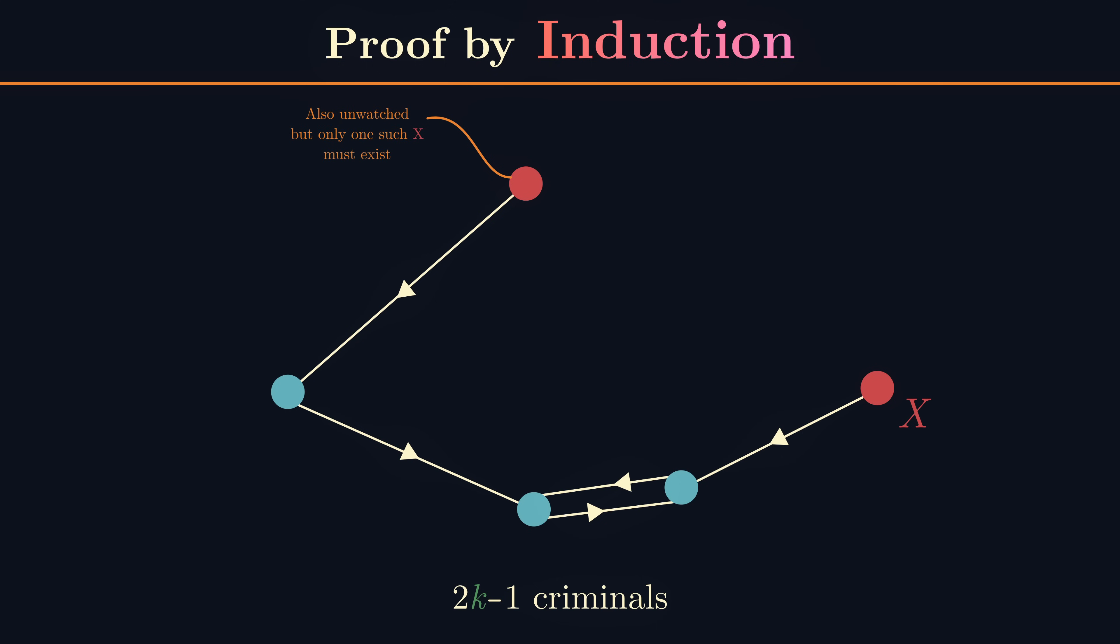Then for the next case in our inductive step, with 2k+1 criminals, we choose criminals a and b such that their distance is minimal over all possible pairs of criminals and remove these from the room. This leaves us with 2k-1 criminals, but we have to be careful and note that some of our criminals who were originally watching a or b are now watching some different criminal.